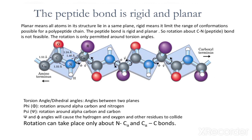Other bonds in the chain can rotate. Rotation is only permitted around torsion angles. The R-chain attached to the alpha carbon forms torsion angles and can rotate, but the peptide bond itself cannot rotate. Rotation can take place only about the N–Cα bond and the Cα–C bond (at the alpha carbon), but not at the peptide bond itself.